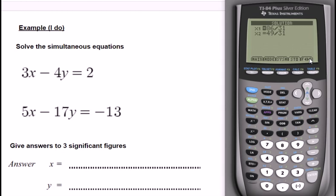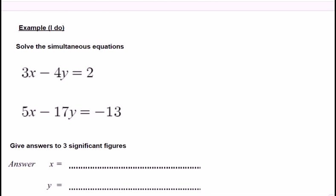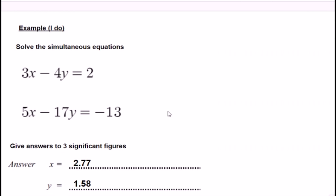then you can see this little FD bit here. If we just press that, it converts them to the form that we want. So X is 2.77, and Y is 1.58, just like that.